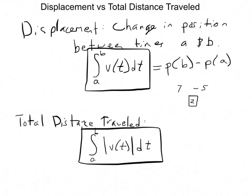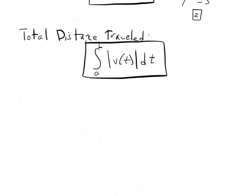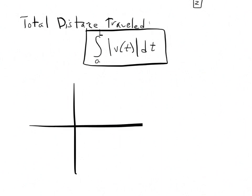Now I want to take a minute to talk about the difference between these two things. Let's say an object starts at position 7 and ends at position 5. We can tell that the displacement is 2. But we don't know for sure that the object simply went from 7 to 5. For all we know, it may have gone from 7 to 10, from 10 back to 2, and then from 2 back to 5.